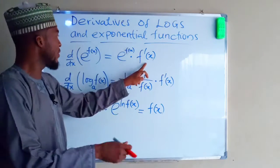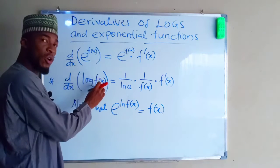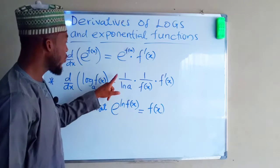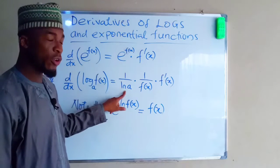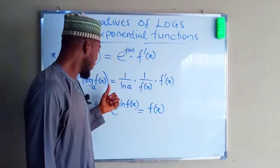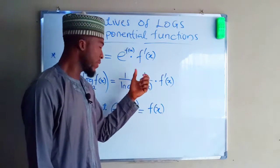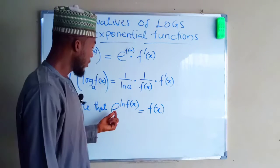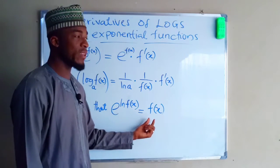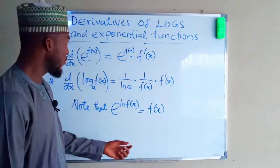The derivative of log of a function with base a is equal to 1 over the natural log of base a, multiplied by 1 over the function, multiplied by the derivative of that function. The exponential of the natural log of a function is the same thing as the function itself — I'll prove this for you.